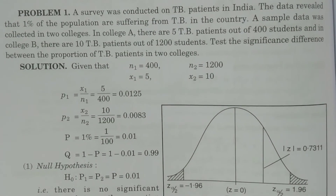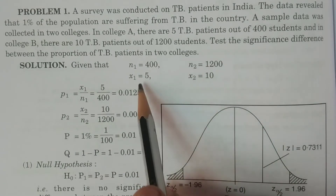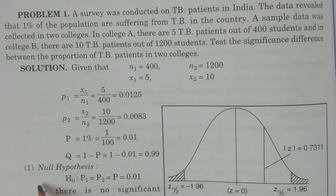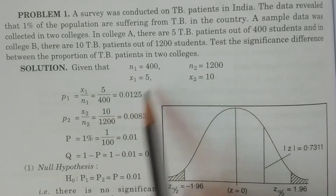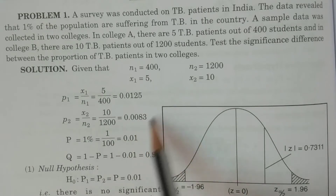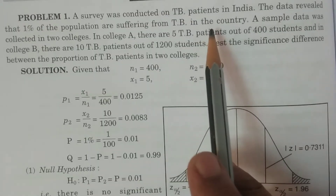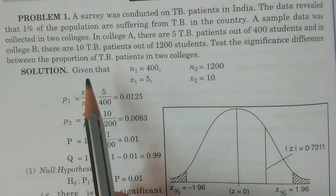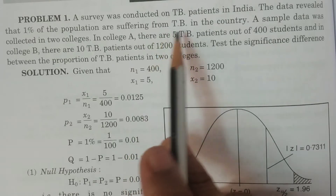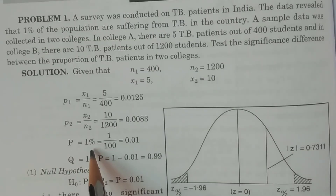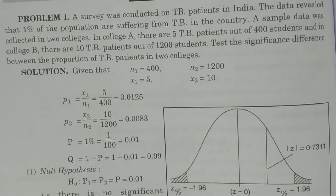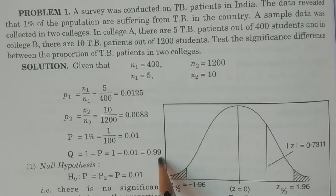From the data, we calculate small p1 = X1/N1 = 5/400, and small p2 = X2/N2 = 10/1200 = 0.0083. Capital P is given from the problem as 1% = 0.01. Therefore Q is equal to 1 minus P, that is 1 minus 0.01, which gives Q = 0.99.